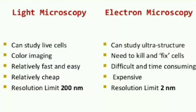In the case of a light microscope we can study live cells, whereas in the case of electron microscopy we can only study ultrastructure. In light microscopy, color imaging is done, whereas in the case of electron microscopy we need to kill and fix the cells.